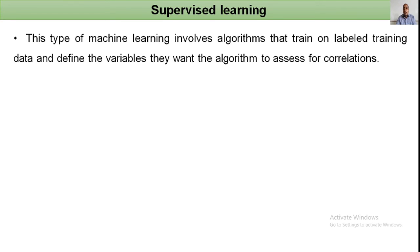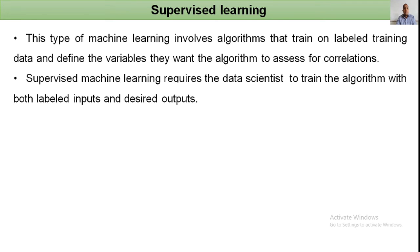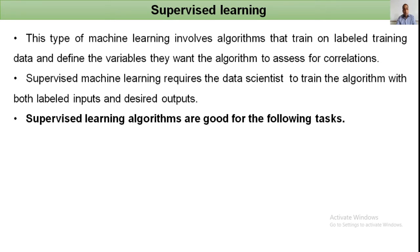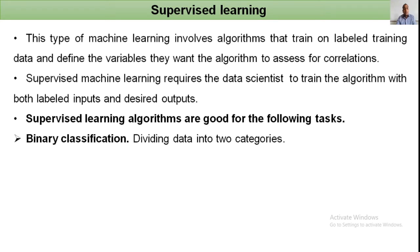Supervised learning involves algorithms that train on labeled training data and define the variables they want the algorithm to assess for corrections. Supervised machine learning requires the data scientist to train the algorithm with both labeled inputs and desired outputs. Supervised learning algorithms are good for binary classification — dividing data into two categories.